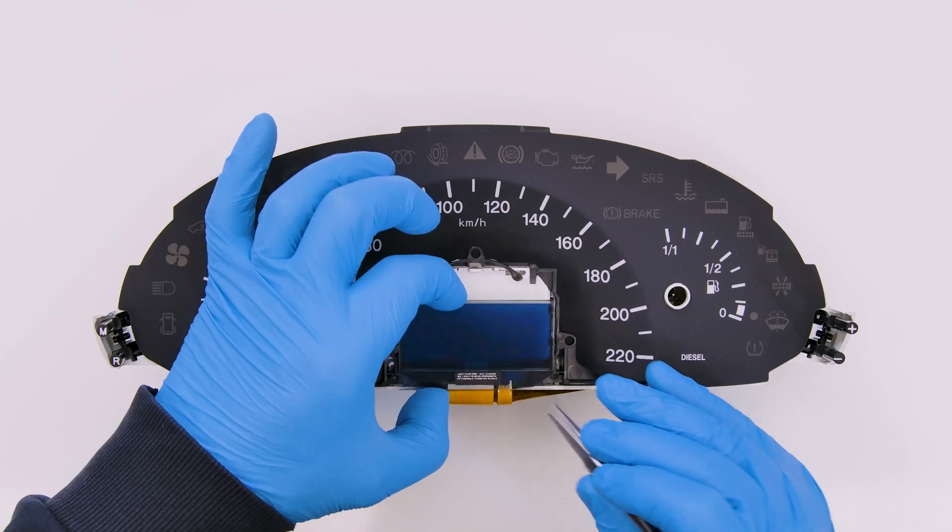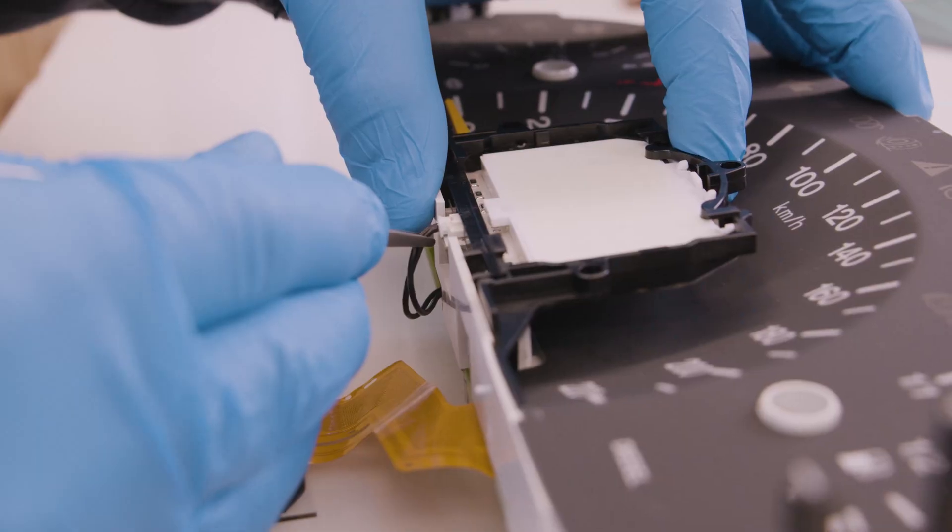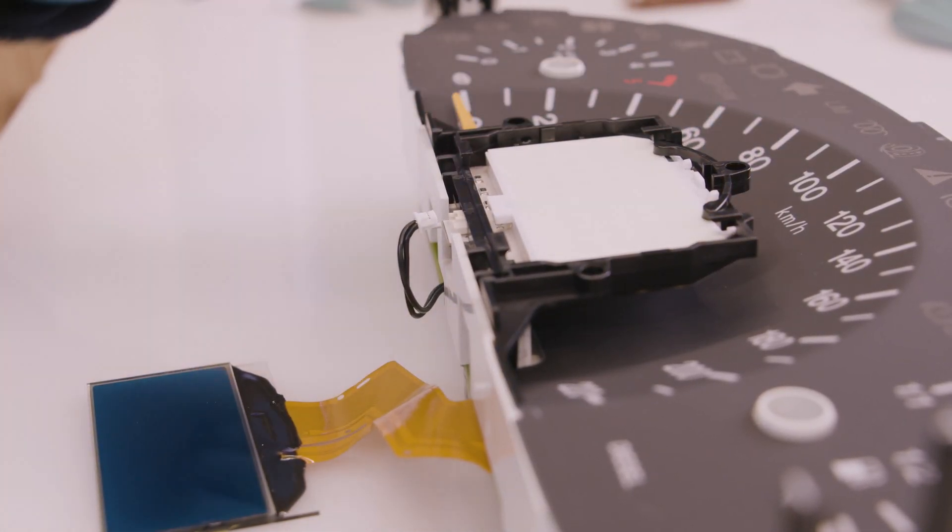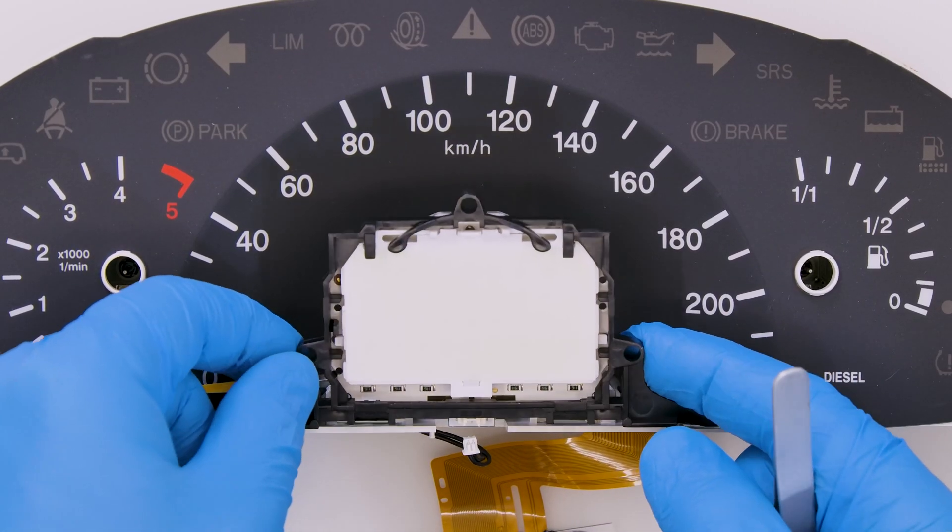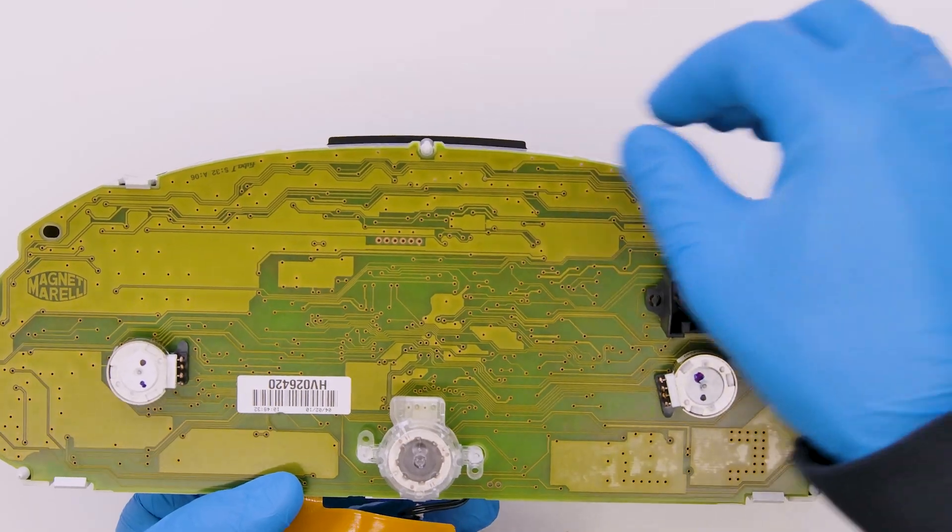With the head of the tweezers, release the LCD. Unplug the connector below the display housing, which we remove. Take out the middle needle. Release the PCB.